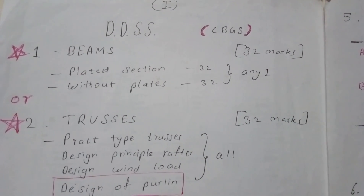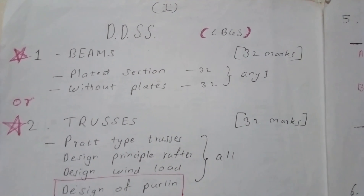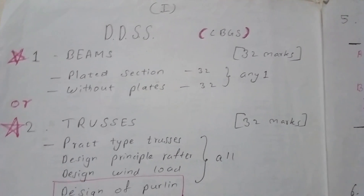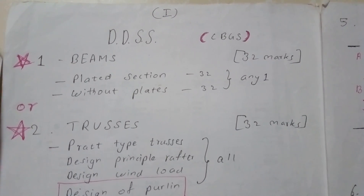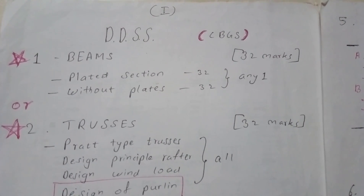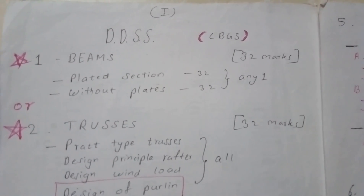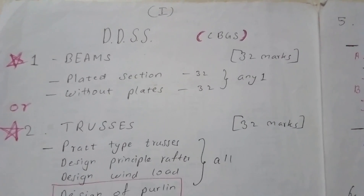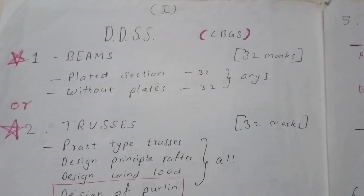If you only calculate values and don't draw what you are asked to design, you may lose marks for drawing and possibly for the numerical too. Even if you have a bad drawing, still draw — if you don't get marks for drawing, you will at least get full marks for the numerical. Drawing is compulsory.